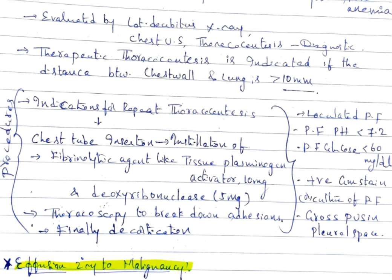Therapeutic thoracocentesis is indicated if the distance between chest wall and lung is greater than 10 mm. Procedures like repeat thoracocentesis, chest tube insertion, installation of fibrinolytic agent, and thoracoscopy or decortication are indicated in certain conditions like loculated pleural effusion, pleural fluid pH less than 7.2, pleural fluid glucose less than 60 mg per deciliter, positive gram stain or culture, or gross pus in the pleural space.